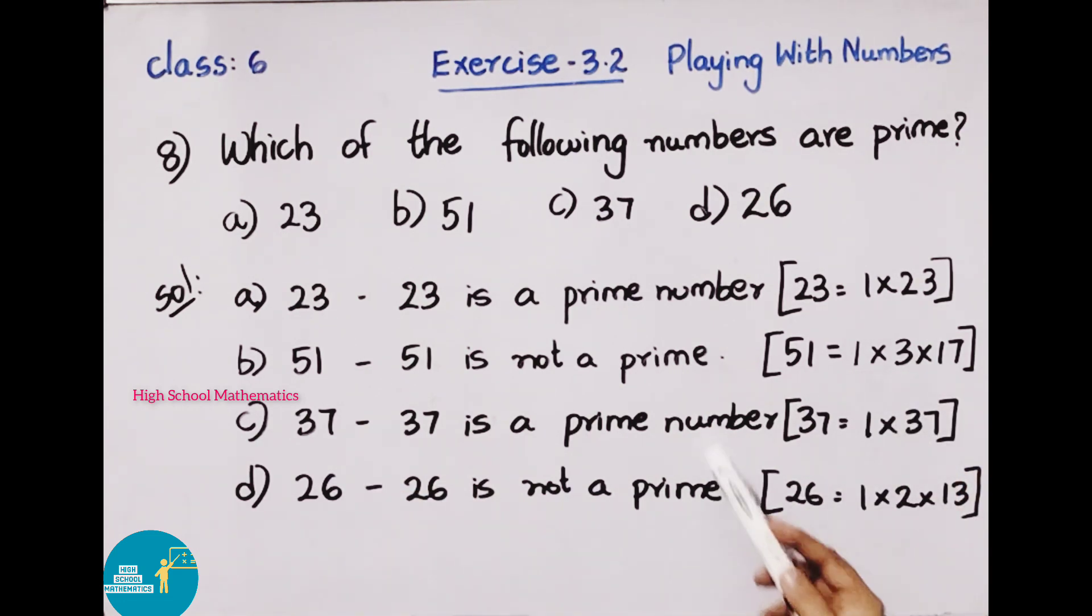Next, c) 37. 37 is a prime number. 37 can be expressed as 1 into 37. 37 has 1 and itself only as factors. So 37 is a prime number. Next, d) 26. 26 is not a prime. 26 can be expressed as 1 into 2 into 13. 2 times 13 is 26. 26 has 1 and itself, but also 2 and 13 as factors. It has more than 2 factors. So it is a composite number, not a prime number. 26 is not a prime.